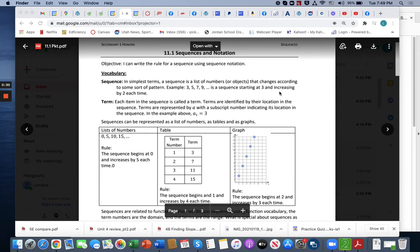In simplest terms, a sequence is a list of numbers or objects that changes according to some sort of pattern. Example: 3, 5, 7, 9 is a sequence starting at 3 and increasing by 2 each time.